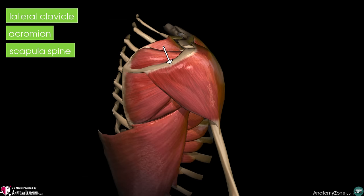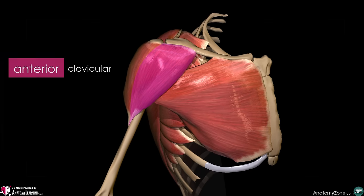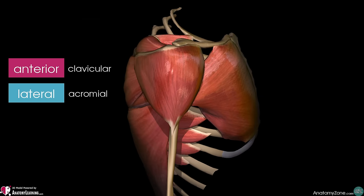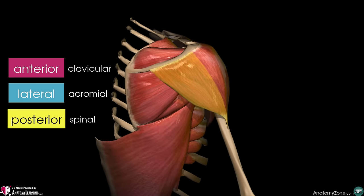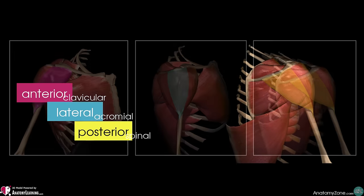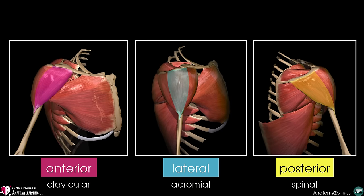The deltoid muscle is divided into three distinct sets of fibres on the basis of these three origins: the anterior or clavicular fibres, the lateral or acromial fibres, and the posterior or spinal fibres. These different fibres are often referred to in strength training and bodybuilding circles, whereby different exercises are utilised to target them — referred to as the anterior, lateral and posterior deltoids, or delts.